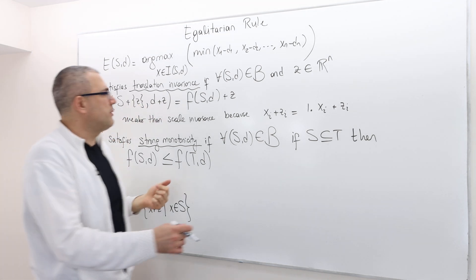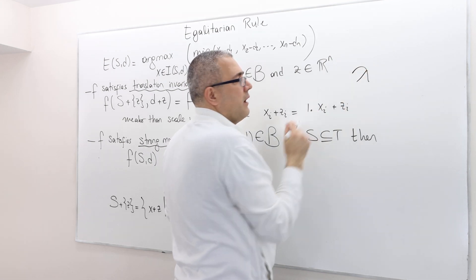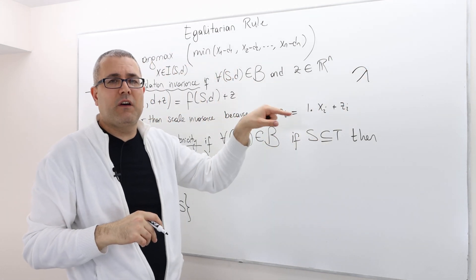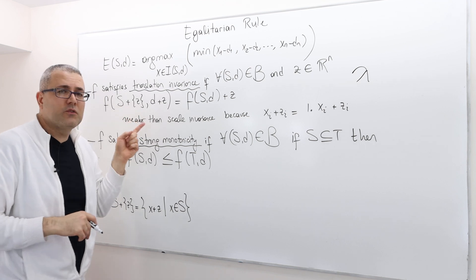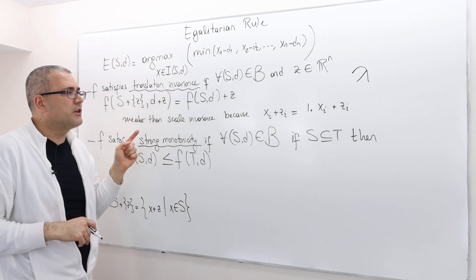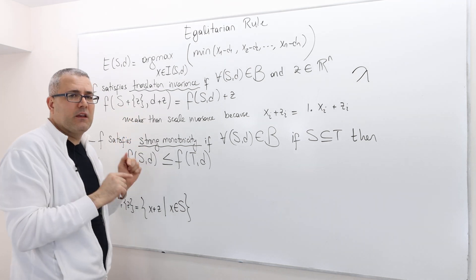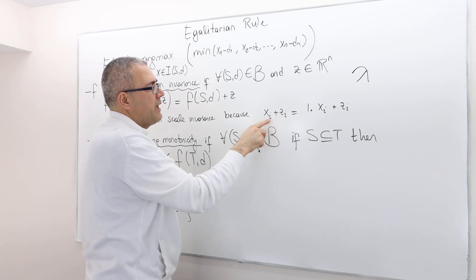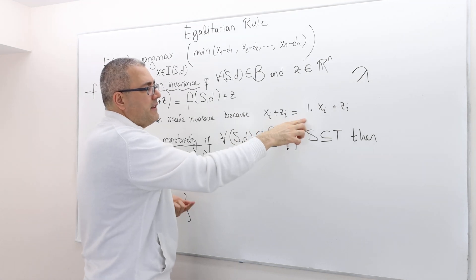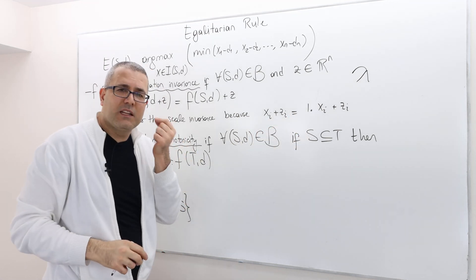Remember in scale invariance, I had lambda, and that was a positive affine transformation. This is also a positive affine transformation, but it's a specific one because xi plus zi basically means the constant...